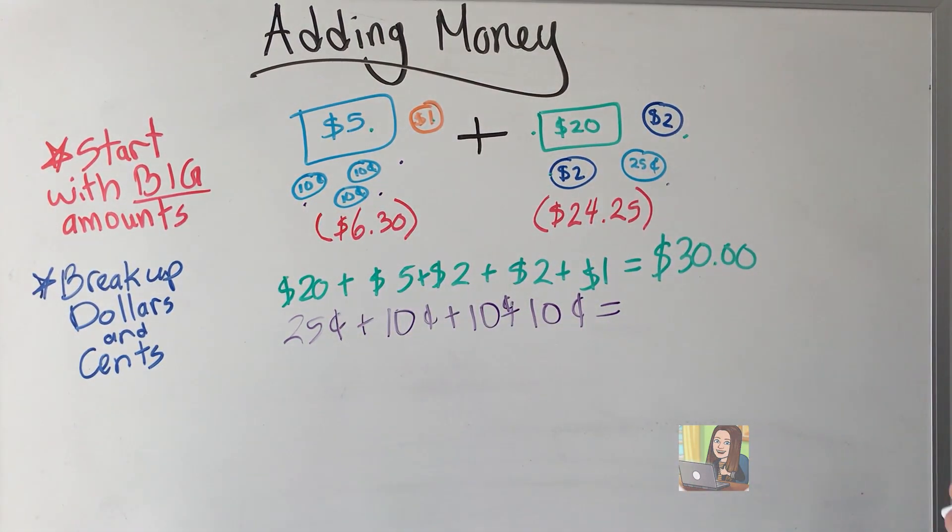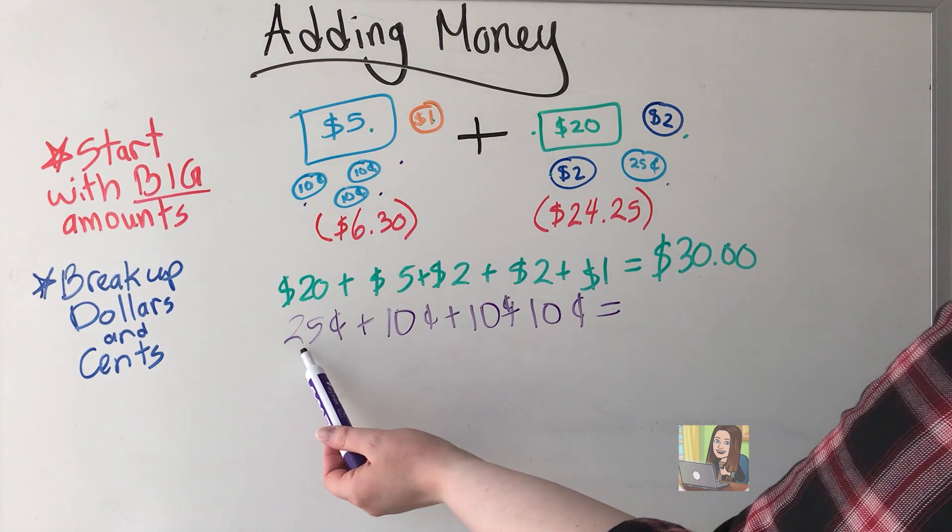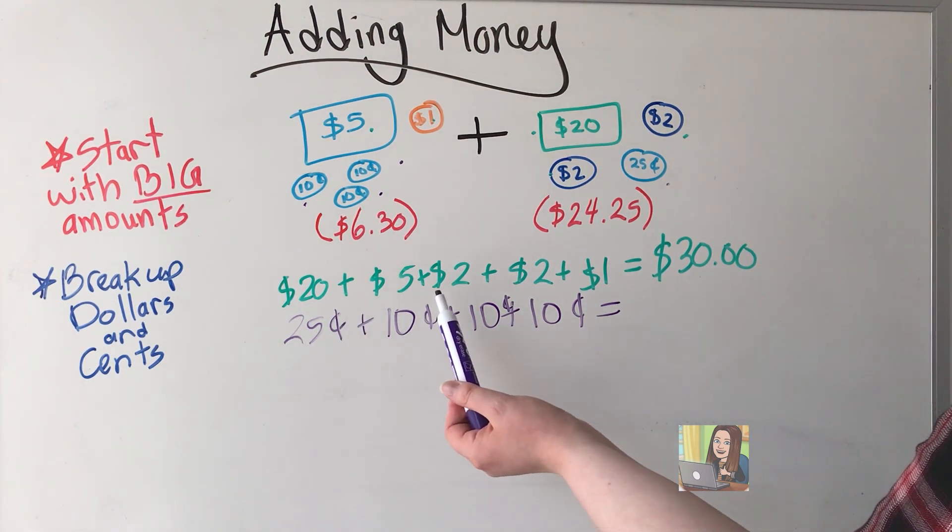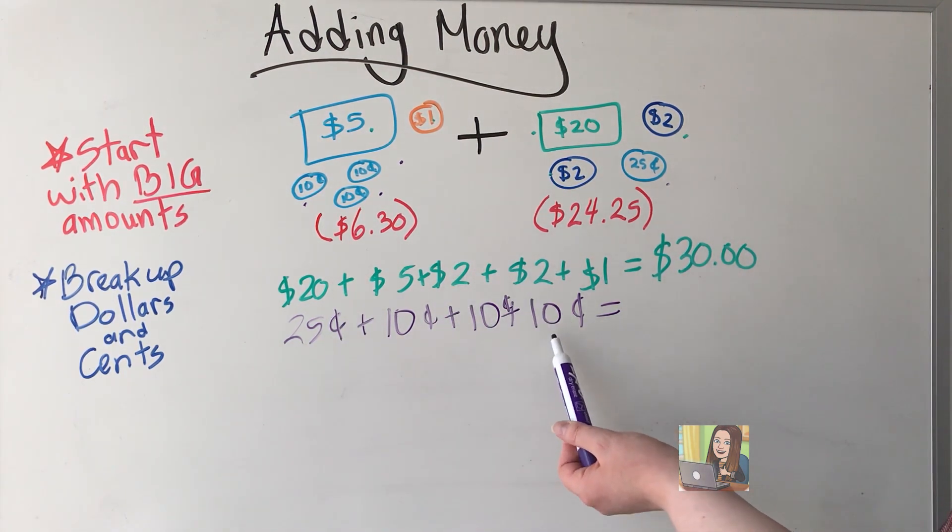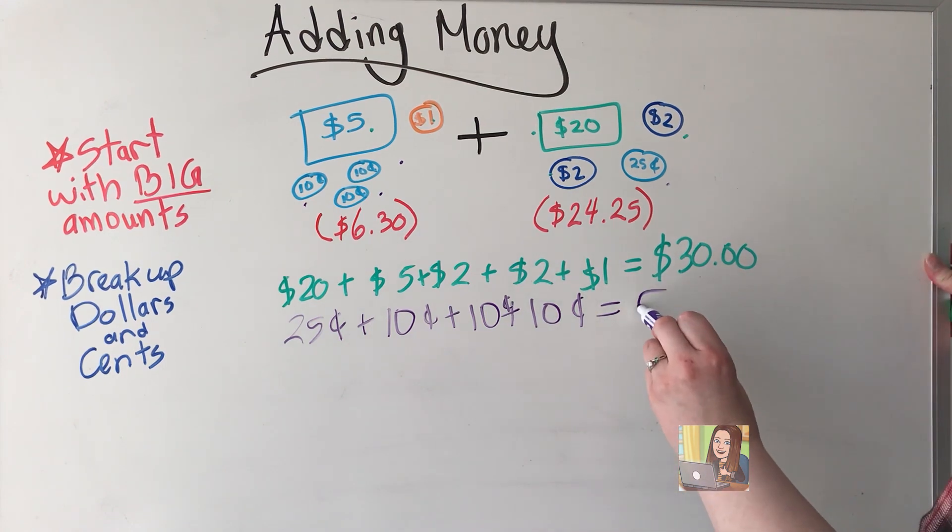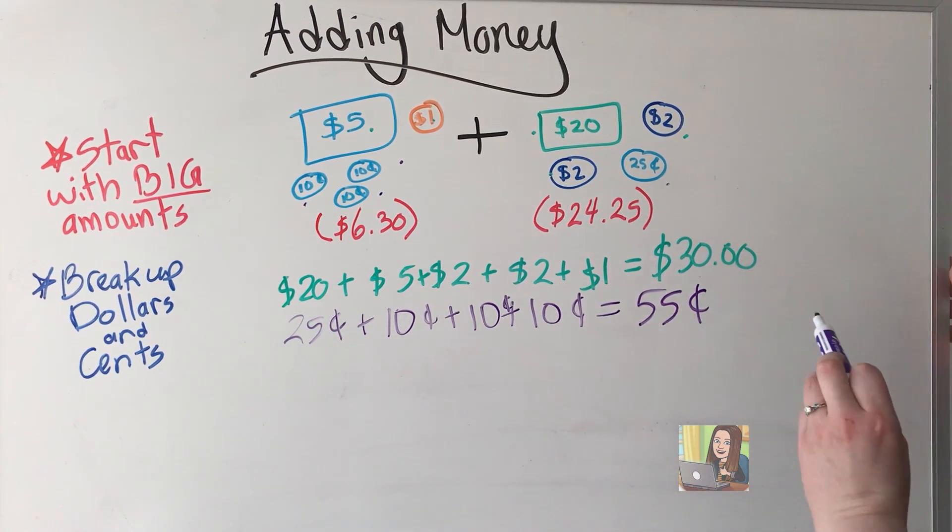Great. Let's count it up. 25 plus 10 is 35. Plus 10 is 45. Plus 10 is 55 cents.